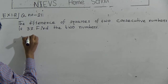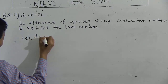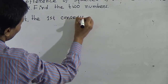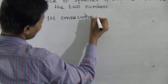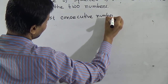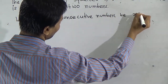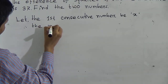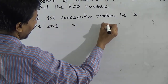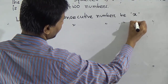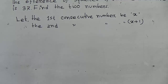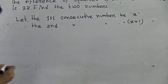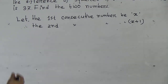Let the first consecutive number be x. Therefore, the second consecutive number will be x plus 1. Consecutive numbers means if the first number is x, then the second number is x plus 1, and the next would be x plus 2, and so on.